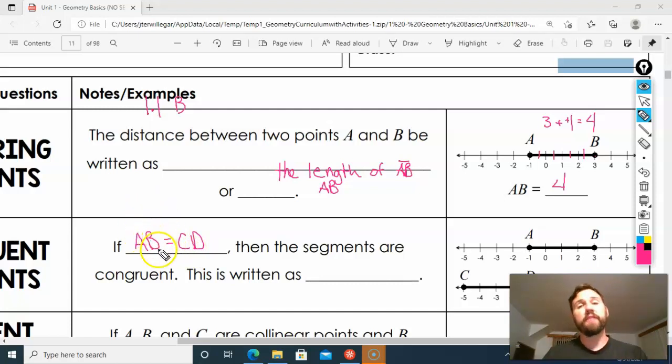then the segments are congruent. And I'd write that as AB—the hat, I'm talking about the actual segment now—is congruent to segment CD. We're going to be using this a lot this year, so we have to make sure we get this.